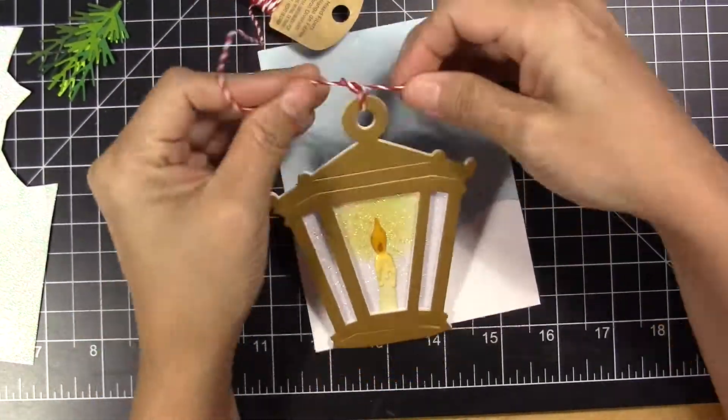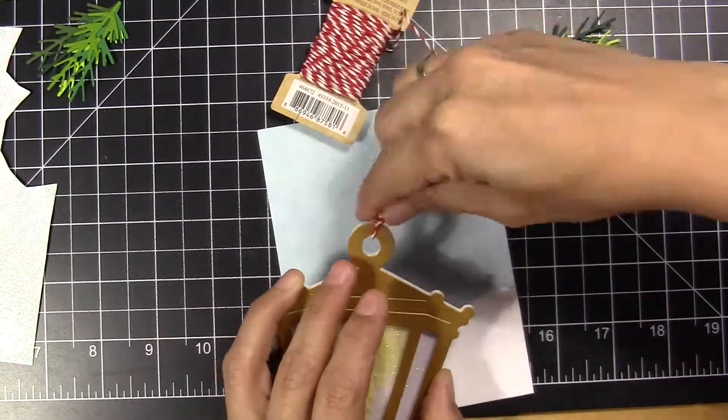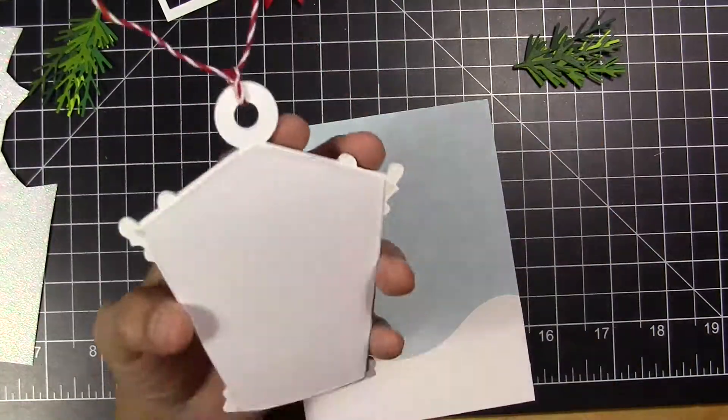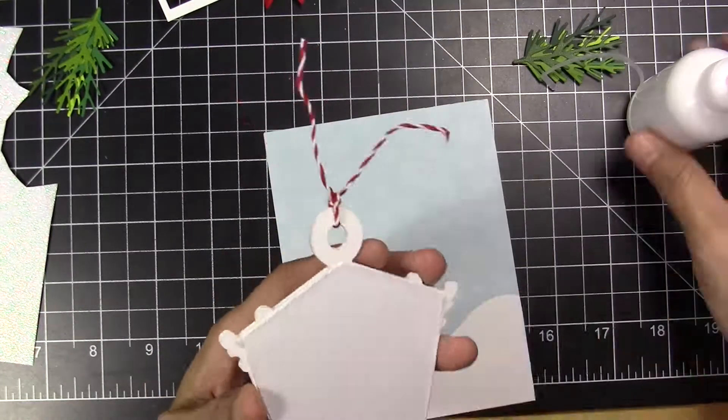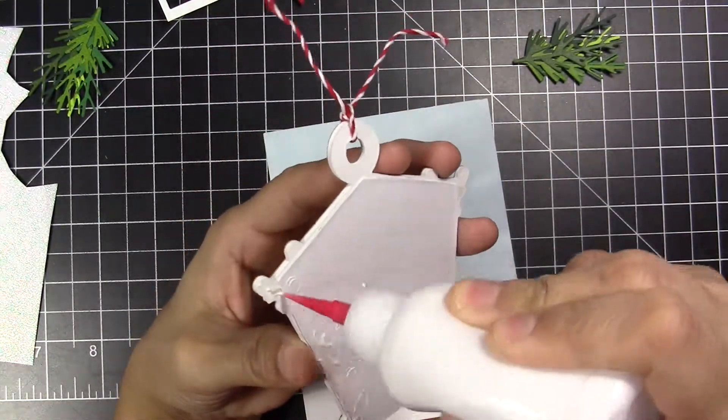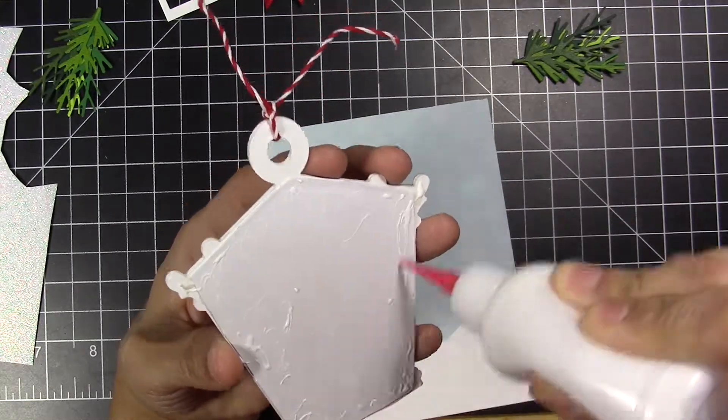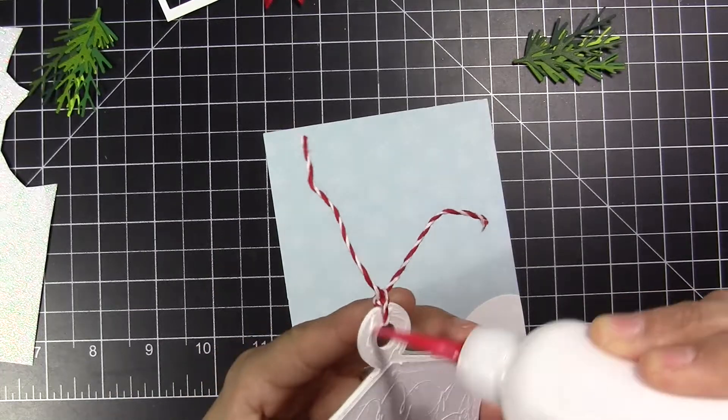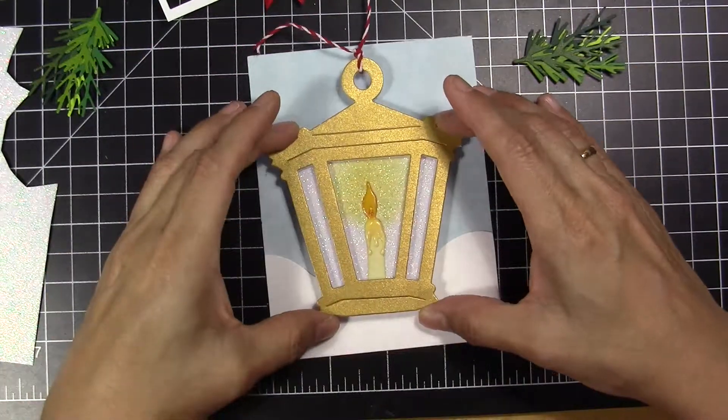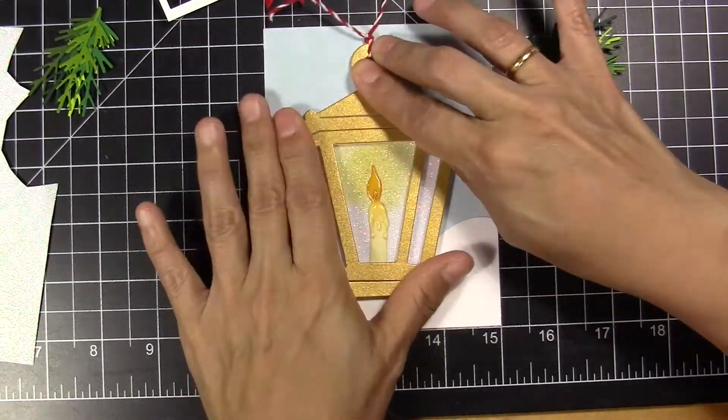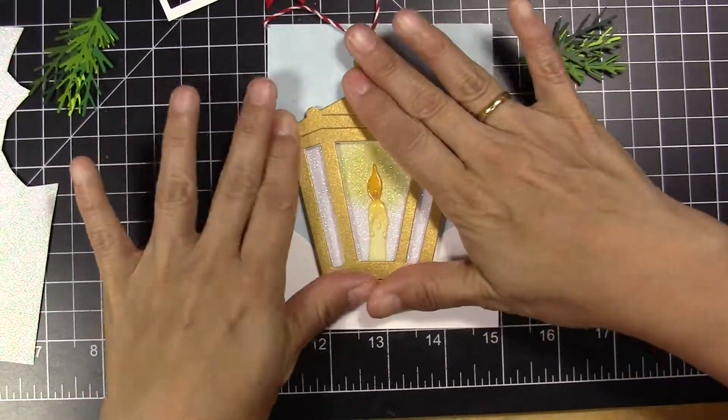Before gluing my lamp, I'm going to add the Baker's twine on the top of the hanger of the lamp, and I'm going to take the remnant of the thread and put it in the back of the panel. Now I'm going to glue my lamp, and then I'm going to glue the pieces of the Baker's twine that are hanging out in the back of the panel using just tape.